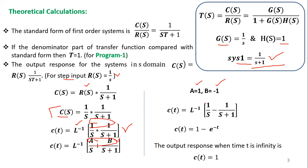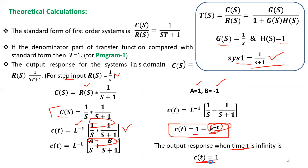Substituting A = 1 and B = -1, we get c(t) = inverse Laplace of [1/s - 1/(s+1)] = 1 - e^(-t). This is the output response for case 1. As t → ∞, e^(-∞) = 0, so c(t) → 1. Similarly, for the second case the output response is 1 - 0.5e^(-0.5t), and as t → ∞, c(t) → 1 as well.